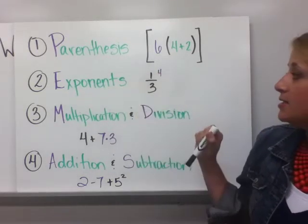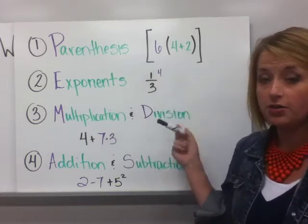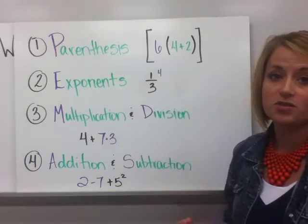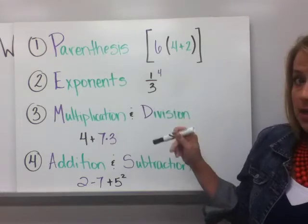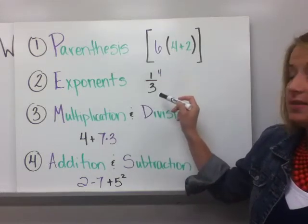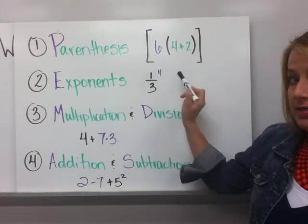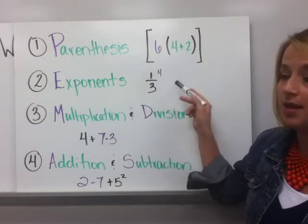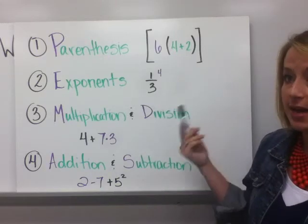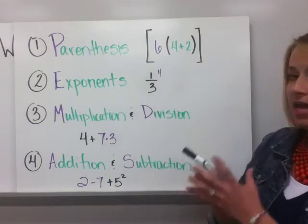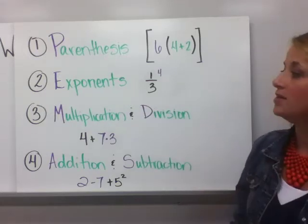Second is exponents. Something like one-third to the fourth power or five squared. And as you should already know what that exponent tells you is that that base is being multiplied by itself four times. So that would literally mean one-third times one-third times one-third times one-third and you evaluate that out before you move on to the next step.